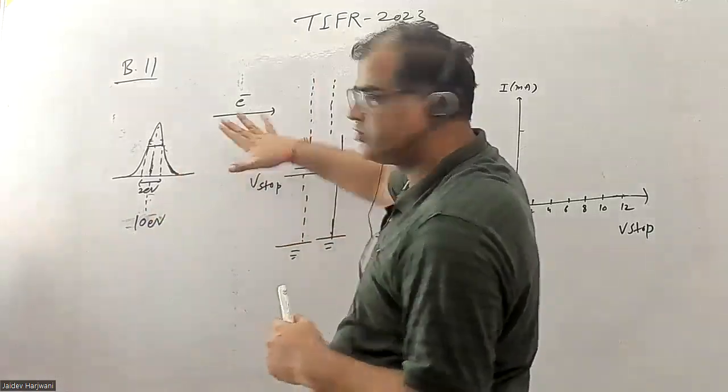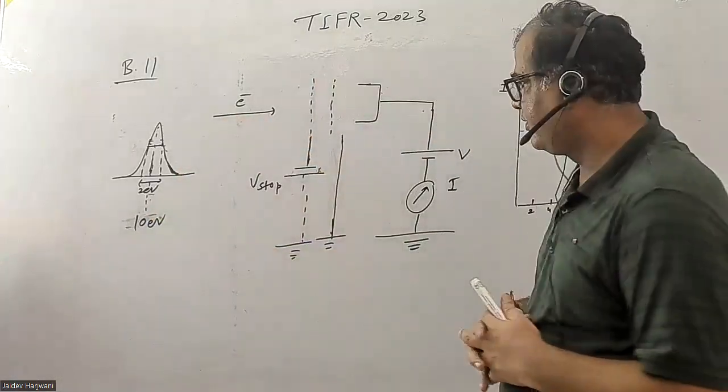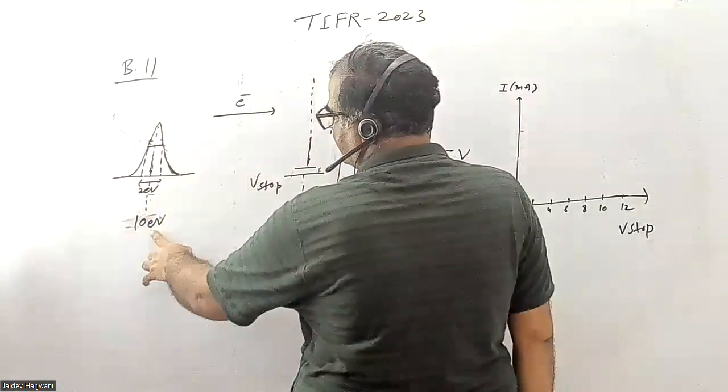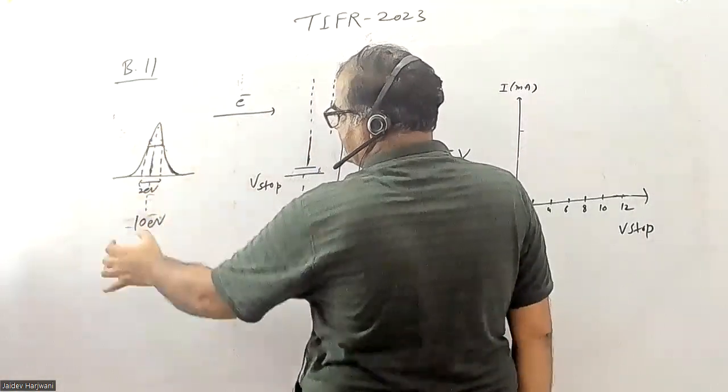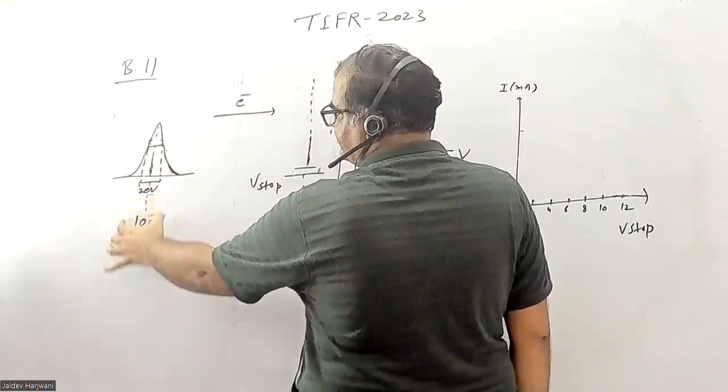The energy distribution of this electron beam is Gaussian, which is centered around 10 electron volts, and the energy spread at full width half maximum is 2 electron volts.